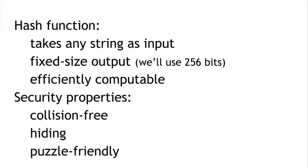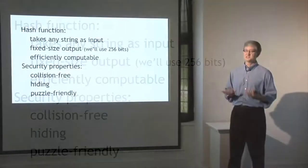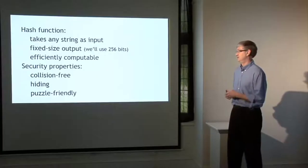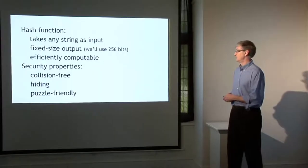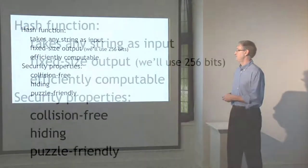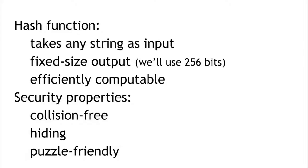First, a hash function can take any string as input — absolutely any string of any size. It produces a fixed-size output; we'll use 256 bits in this series because that's what Bitcoin does. And it has to be efficiently computable, meaning given a string, in a reasonable length of time you can figure out what the output is. We're going to need hash functions that are cryptographically secure. We'll focus on three particular properties: that the function is collision-free, that it has a hiding property, and that it's puzzle-friendly.